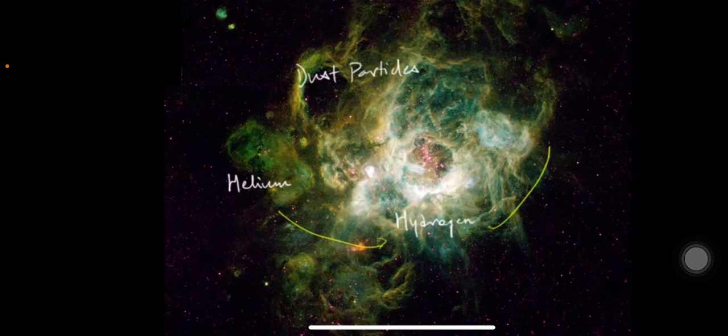Most of the hydrogen and helium concentrated in the center because hydrogen and helium are very light elements — like helium balloons, they rise. So hydrogen and helium moved to the center, and these particles started colliding. The collisions caused friction.